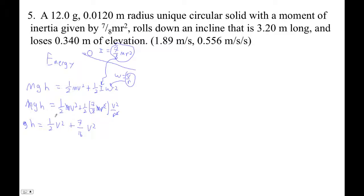Well, let's see. If that's 7 sixteenths, this must be 8 sixteenths, right? Because it's 1 half. That's 15 sixteenths, right? GH is 15 sixteenths V squared, so V must be the square root of 16 fifteenths GH. So let's plug the numbers in.